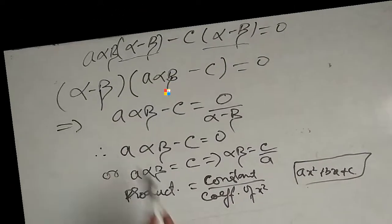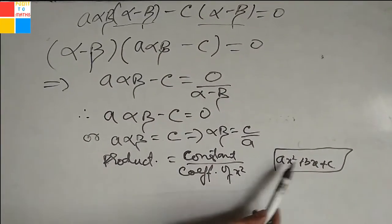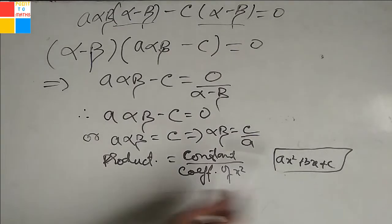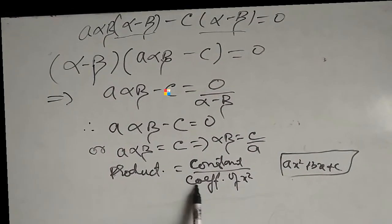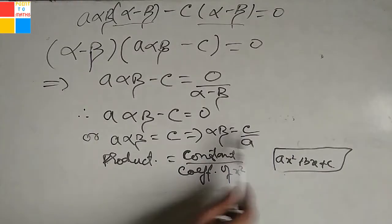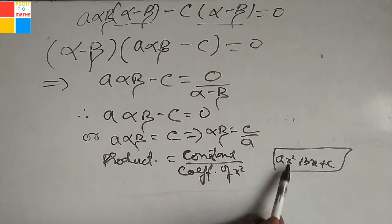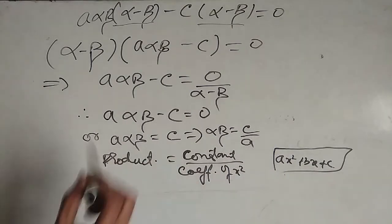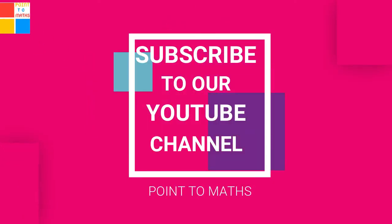The product of zeros of a quadratic polynomial of the form ax squared plus bx plus c is always equal to the constant term divided by the coefficient of x squared. Here the constant term is c and the coefficient of x squared is a. Subscribe to our YouTube channel Point2Maths and press the bell icon to receive notifications.